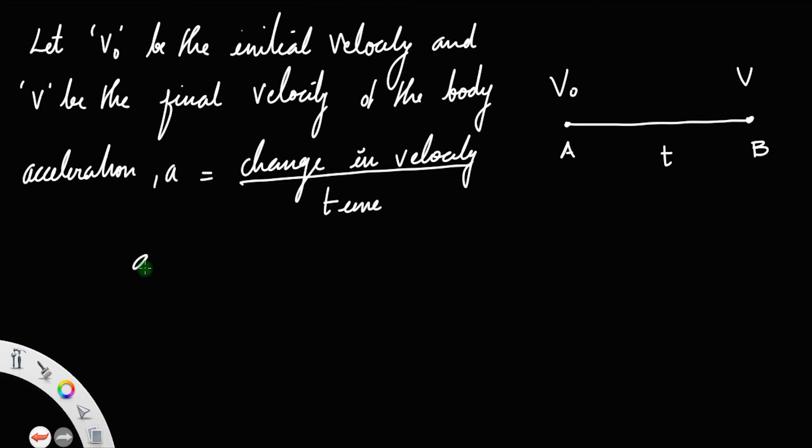That is, acceleration a equals the change in velocity, which is final velocity minus initial velocity: a = (v - v0) / t.